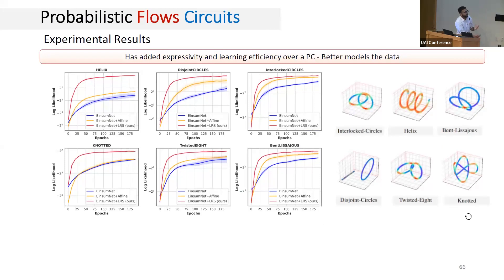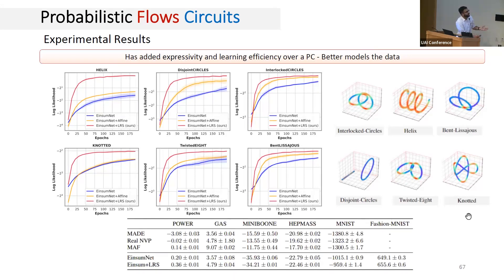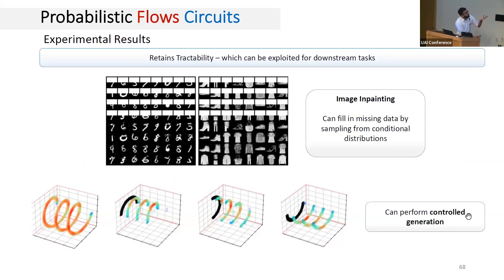We experimentally validated the added expressivity and learning efficiency of integrating normalizing flows at the leaves of PCs using several synthetic and real-world data distributions. We observed that flow circuits achieved better performance much faster, often putting them in the same ballpark as less tractable models such as normalizing flows. The tractability for conditional and marginal inference can also be leveraged in downstream applications such as image inpainting — generating missing pixels by sampling from the conditional over occluded pixels given non-occluded pixels — and controlled generation.